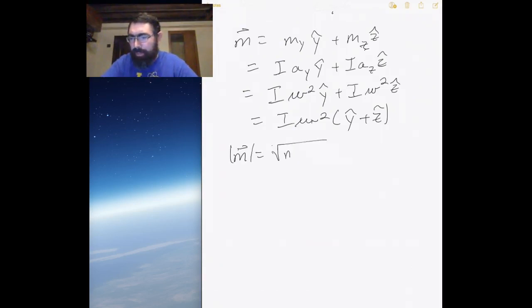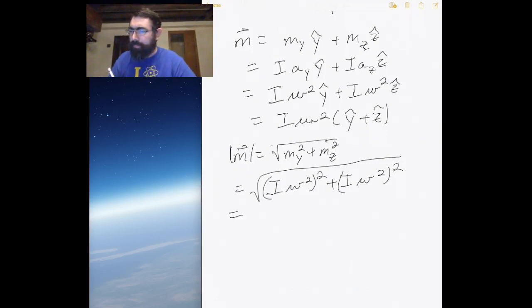If I look at the overall magnitude, that would just be by Pythagorean theorem: component in the y direction squared plus the component in the z direction squared. So I would have I W squared squared plus I W squared squared, square root. I basically factor out an I W squared and I get one plus one, or the square root of two times the current times the area.